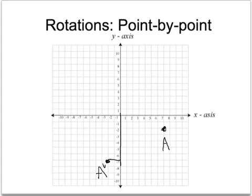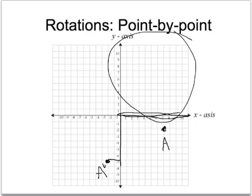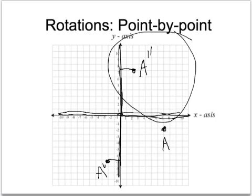If I wanted to rotate point A 270 degrees clockwise, I know I'm going to end up in this quadrant. I'm going to work it the same way — this was the 90 degree axis, this would be 180, so I'm going to use this axis to rotate it 270 degrees. Seven units up this axis and two units away, and my point A double prime will be located right over here in this quadrant — seven units up and two units away.